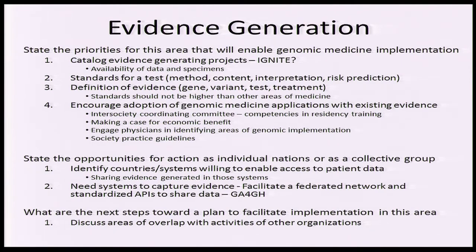We also talked about the need to standardize tests so that you can compare apples to apples — whether it be methodologies, defining content of tests, standardization of interpretation, and ensuring understanding of risk prediction, such as whether we're talking about a variant with high or low penetrance. Also defining evidence: ensuring evidence for gene-disease associations, for variant pathogenicity, for a test's validity, and for a treatment's utility. And pointing out that we shouldn't hold genomics to a higher standard than the rest of medicine.